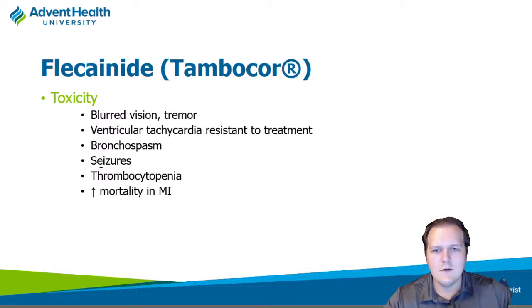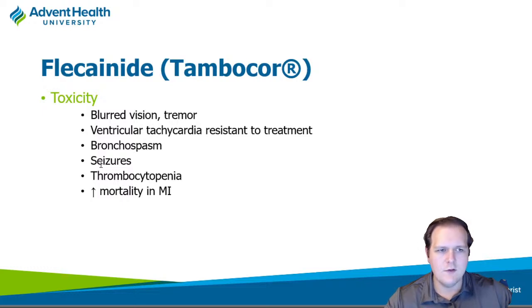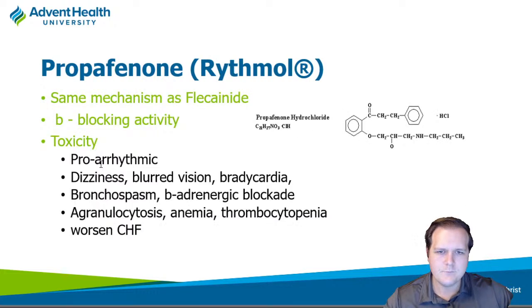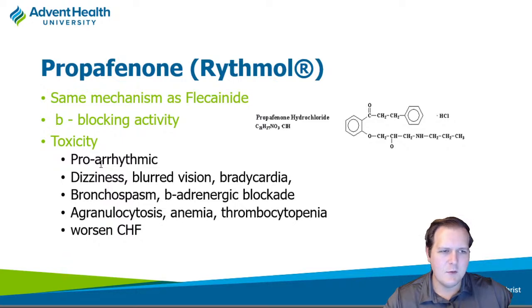Toxicity with class 1C includes VTAC that's very resistant to treatment, bronchospasm if the patient has asthma, seizures, and thrombocytopenia. These are rare but serious enough that we don't prescribe this often without good reason. Do not use flecainide for ventricular arrhythmias due to MI — studies showed higher mortality. Propafenone is similar to flecainide but also has some beta-blocking activity. You can see seizures, bronchospasm, bradycardia, and worsening of CHF with propafenone. Pretty nasty side effect profile, so it's not used all that frequently.